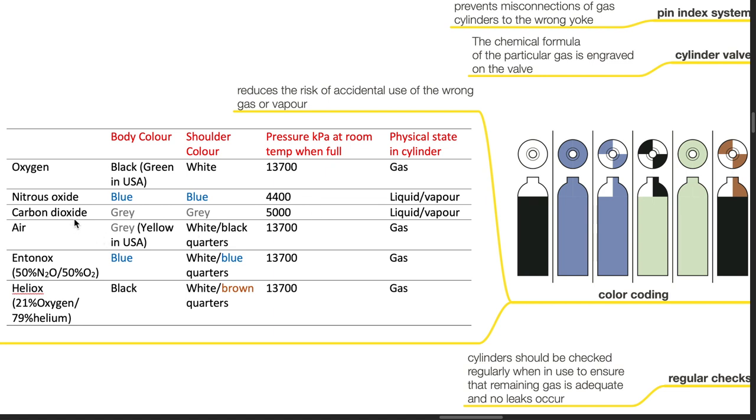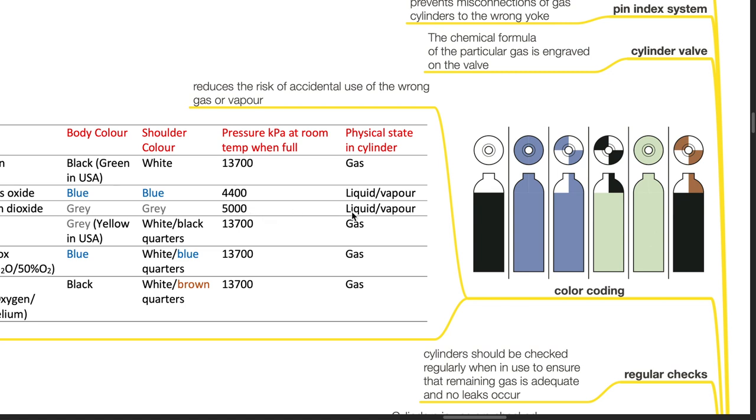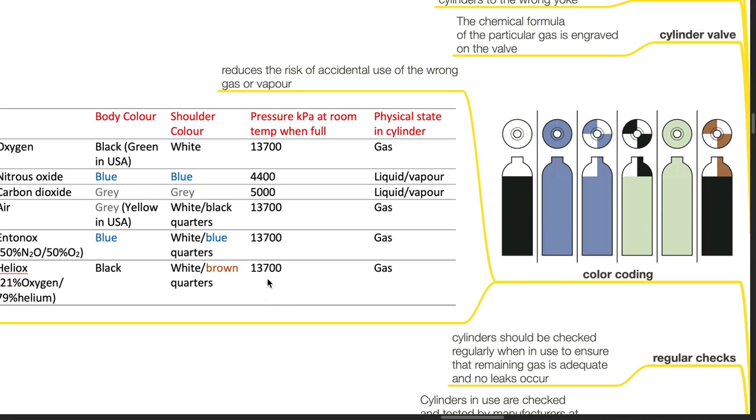Carbon dioxide gas cylinders has a grey body colour and grey shoulder colour. Pressure at room temperature when full is 5,000 kPa. Physical state in the cylinder is liquid or vapour. For air, the body colour is grey, shoulder colour is white and black quarters. Pressure is 13,700 kPa at room temperature when full. Physical state in the cylinder is gas. For entonox, body colour is blue, shoulder colour is white and blue quarters. Pressure is 137,000 kPa at room temperature when full. Physical state in the cylinder is gas. For heliox, body colour is black, shoulder colour is white or brown quarters. Pressure is 13,700 kPa at room temperature when full. Physical state in the cylinder is gas.